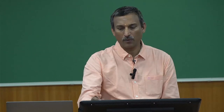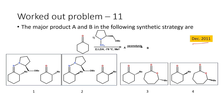Let us move on to the next problem, which appeared in 2011. Here we must identify major products A and B in a synthetic strategy. A cyclohexanone reacts with a hydrazine derivative in the first step. The second step is reaction with LDA at minus 78°C in the presence of methyl iodide to give product A. Product A then undergoes ozonolysis to give product B.